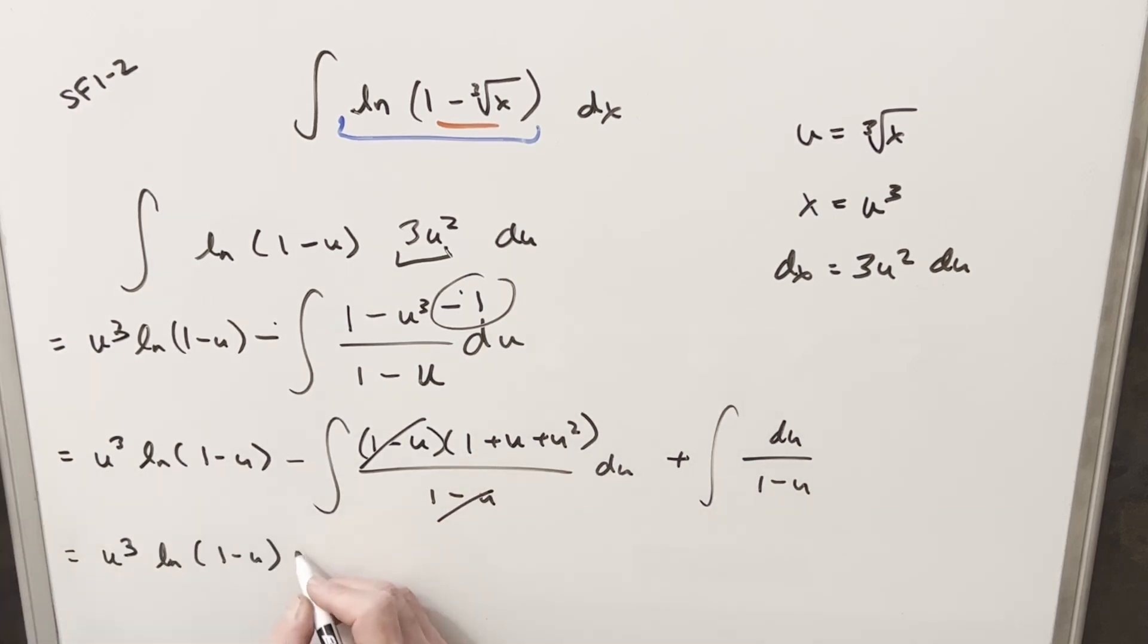So first, we'll integrate 1. We get u. So then we'll distribute in the minus sign. So we're going to have minus u minus. With this one, we're going to have u squared over 2. And then here, we're going to have minus u cubed over 3. And then here, this is going to be natural log 1 minus u. But because we have a minus sign there, I need to bring a minus out front. So we'll have natural log absolute value 1 minus u.